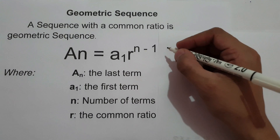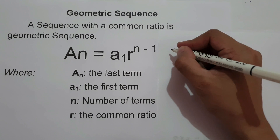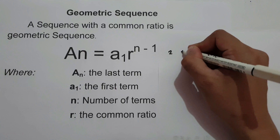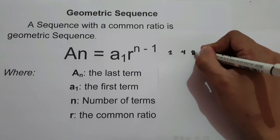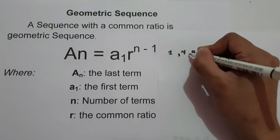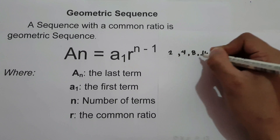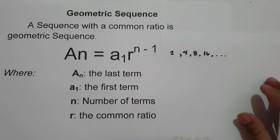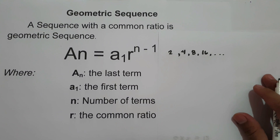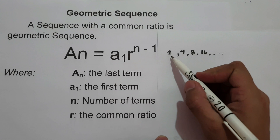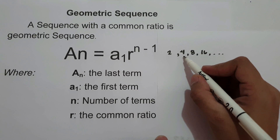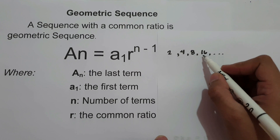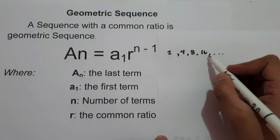For example, we have 2, 4, 8, 16. This is an example of a geometric sequence. So the first term is 2, the second term is 4, the third term is 8, and the fourth term is 16.